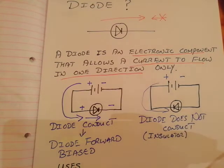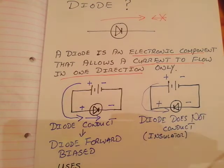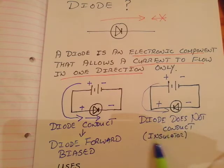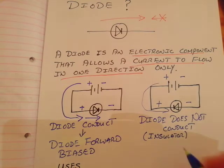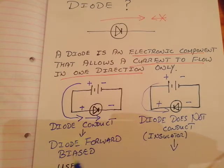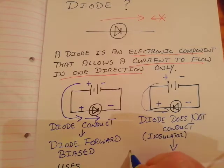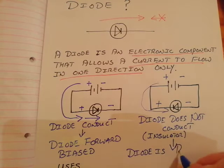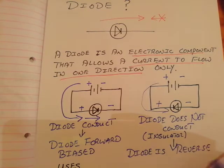When a diode is connected with this end plus and this end minus — the opposite of before — it acts as an insulator and does not conduct. If it conducts it's forward biased; what's the opposite? The diode is said to be reverse biased.